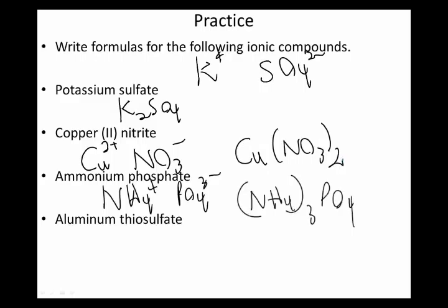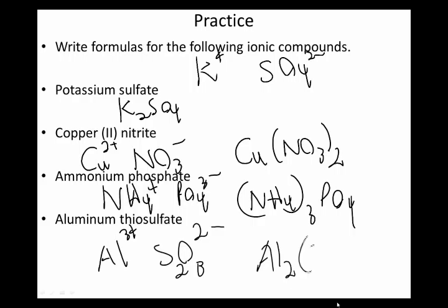And down here, aluminum thiosulfate. Aluminum is always 3+, and thiosulfate is S2O3 2-. So we need, this is one of those weird ones, so we're going to need two aluminums to get us a plus 6, and three thiosulfates to get us minus 6. So there we go.